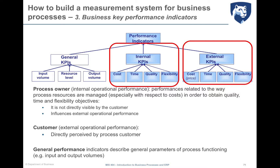Besides these two categories, we have added a third category called General Performance Indicators, which aims to describe the general parameters of process functioning in order to assess the dimension and volume of the process under analysis. Now, let's analyze each type of performance in more detail, with possible KPI examples for each area.